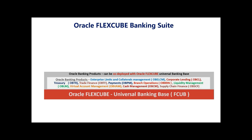So you have OVTR — the Treasury back office — then Trade Finance for letter of credit, bills, payments, collections, and processing for trade finance operations. To handle all kinds of domestic and international payments, wire payments as well as instrument-based payments, there is Oracle Banking Payments, OVPN.